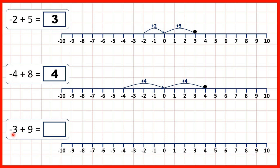So now we have minus 3 plus 9. We could start on minus 3, and then count on 1, 2, 3, 4, 5, 6, 7, 8, 9. That takes us to 6, so that's our answer.